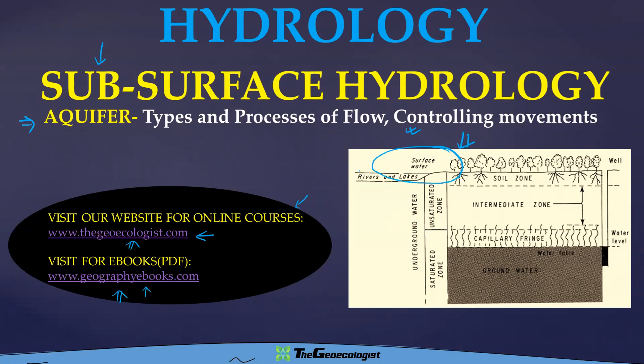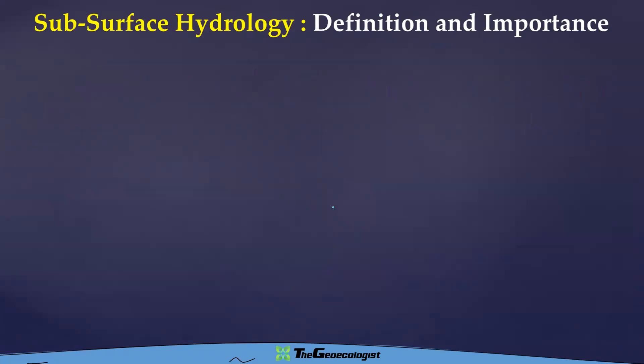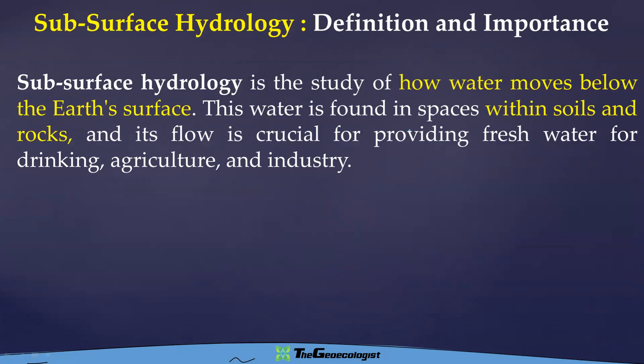We have talked about runoff, overland flow, Hortonian flow and others in surface hydrology. Now we are looking into this unsaturated zone, intermediate zone, then you have capillary fringe and here is your groundwater table. This is called saturated zone. So you are going to look into this inside of the land here in this particular video. Let's understand the subsurface hydrology with the first thing that is definition and its significance or importance.